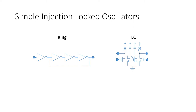To get our bearings, it's useful to first understand what an injection-locked oscillator looks like. Focus first on the ring injection-locked oscillator shown here on the left. What we have in this very simple ILO is a three-stage ring oscillator composed of these three inverters. Imagine that there's an input to this injection-locked oscillator where a high-frequency clock can be applied.